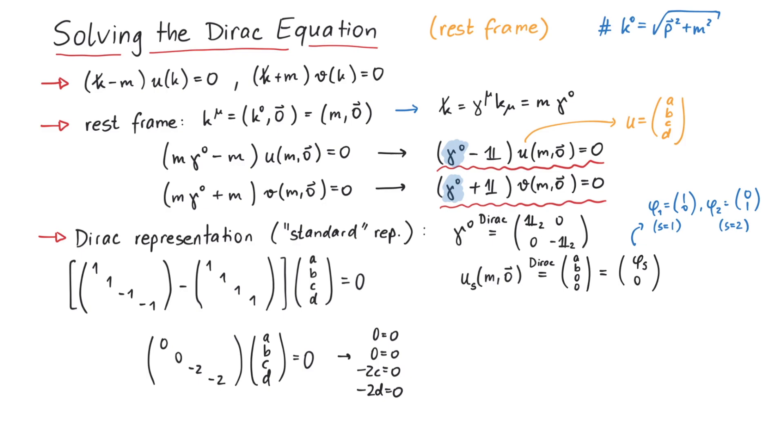So how do we choose these basis states of phi s? Usually it's convenient to choose eigenvectors of Pauli matrices. So for example, if there is a magnetic field in z direction, it might be useful to choose phi s as 1, 0 and 0, 1, representing spin up and spin down along the z axis. But if there is a magnetic field in x direction, then 1, 1 and 1, minus 1, corresponding to up and down along the x axis, might be a better choice.